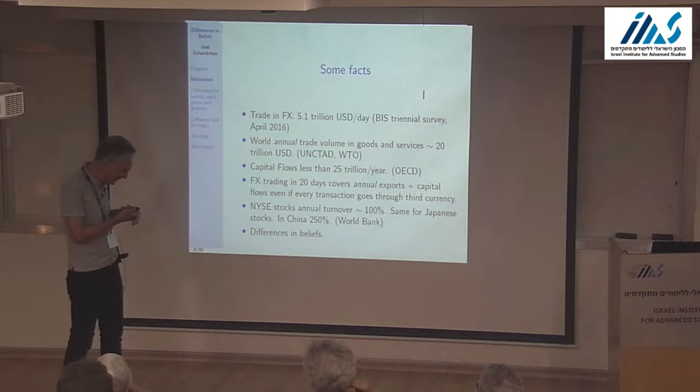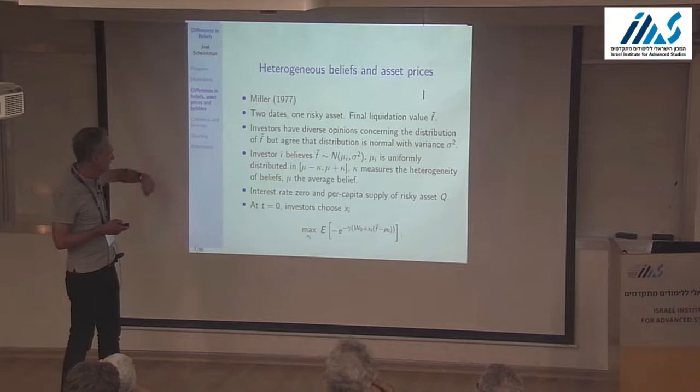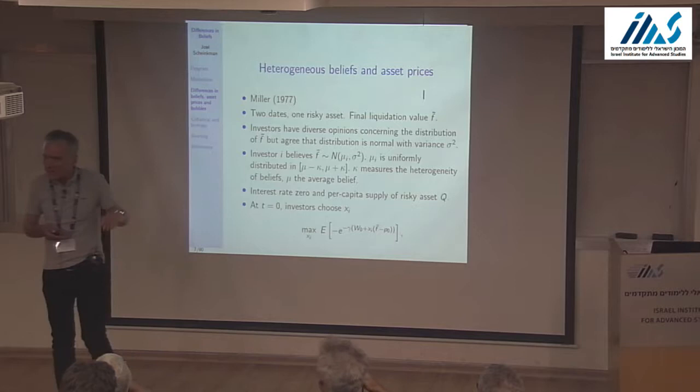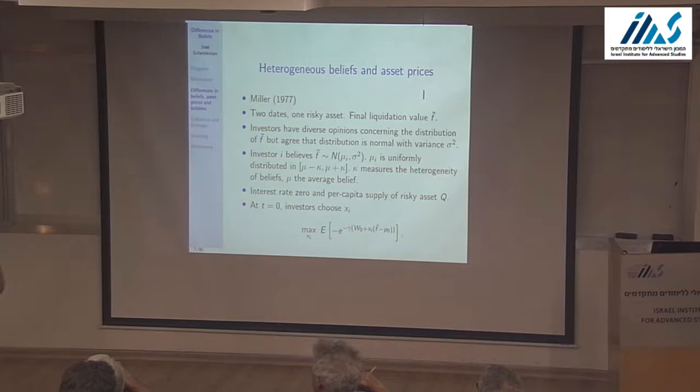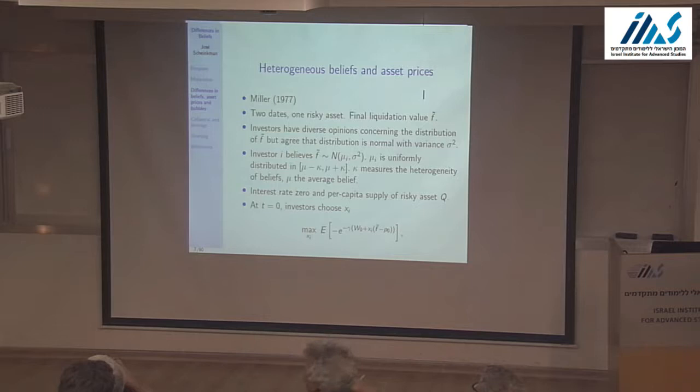This idea is kind of old. There's the Miller paper — not the famous Merton Miller, but Edwin Miller, who as far as I know wrote essentially one paper. Here's Miller in 1977 — he had a very nice idea. He said: let's take the usual trading model, the simplest one, where investors have normal beliefs with a mean and variance about the value of a stock.